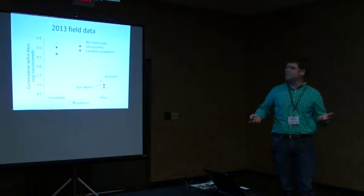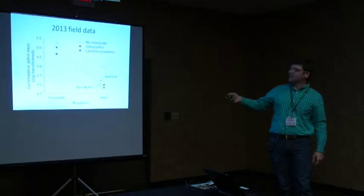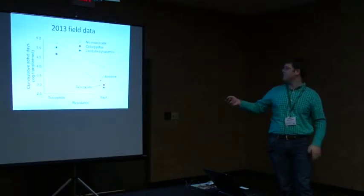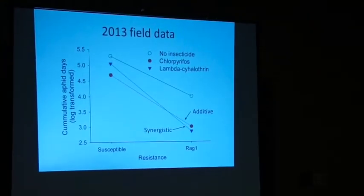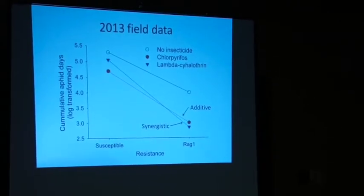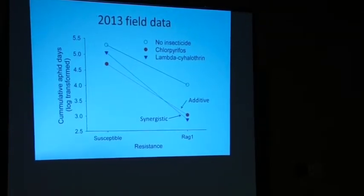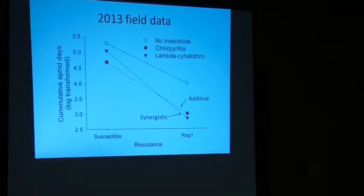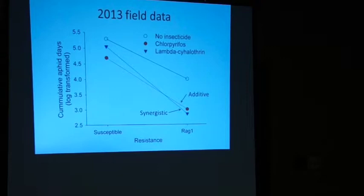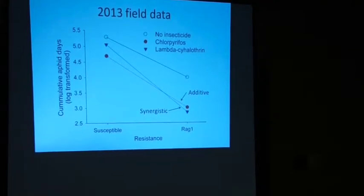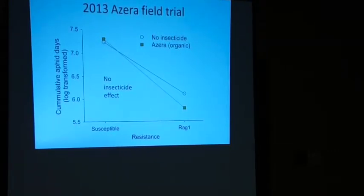Field data from the first year with the two conventional insecticides — chlorpyrifos and lambda-cyhalothrin — showed fewer aphids in both susceptible and RAG1 plants with insecticide treatments. For chlorpyrifos we had parallel lines, indicating an additive interaction. For the other insecticide — lambda-cyhalothrin — we actually had that synergistic interaction. Unfortunately for Azera, the organic insecticide, we didn't see any effect. Statistical tests confirmed the insecticide didn't work in either the susceptible or the RAG1 treatment.